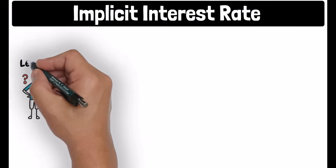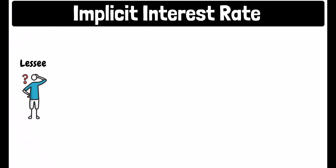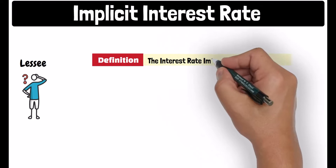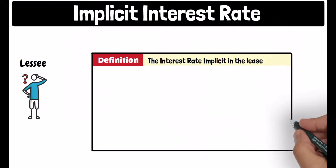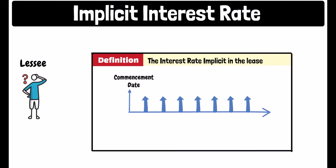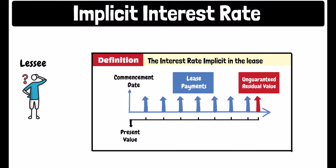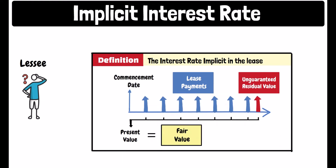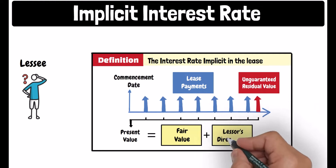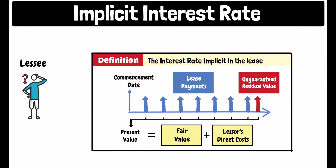A lessee can theoretically figure out the interest rate implicit in the lease, guided by the IFRS 16 definition for that rate. IFRS 16 states that the interest rate implicit in the lease is the rate of interest that causes the present value of the lease payments and the unguaranteed residual value to equal the sum of the fair value of the underlying asset and any initial direct costs paid by the lessor.